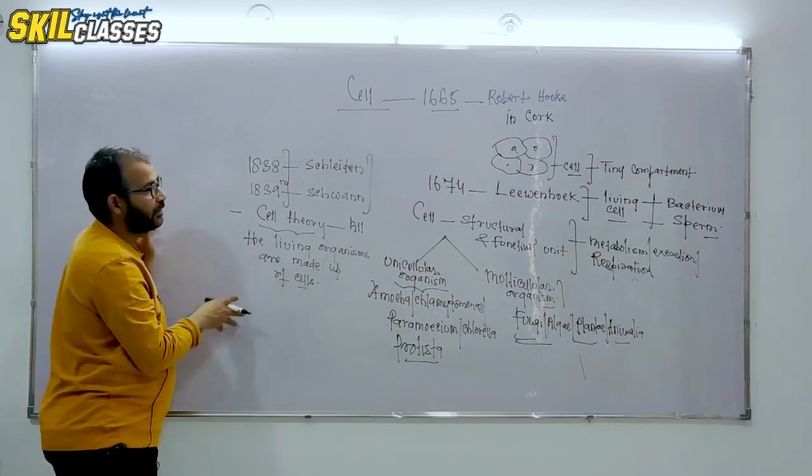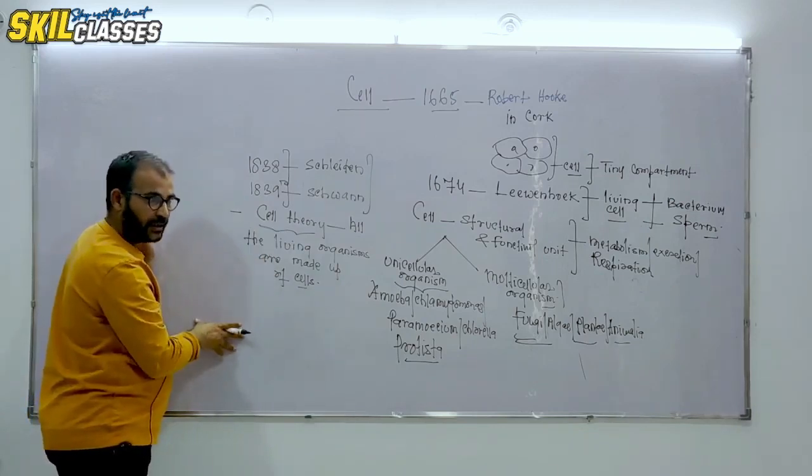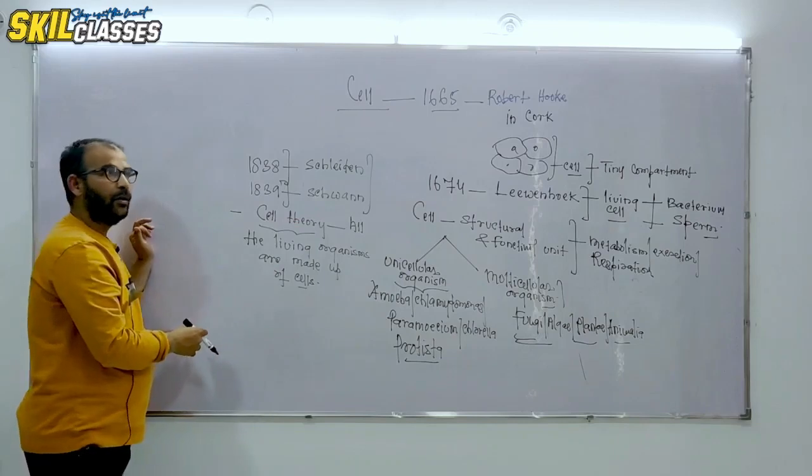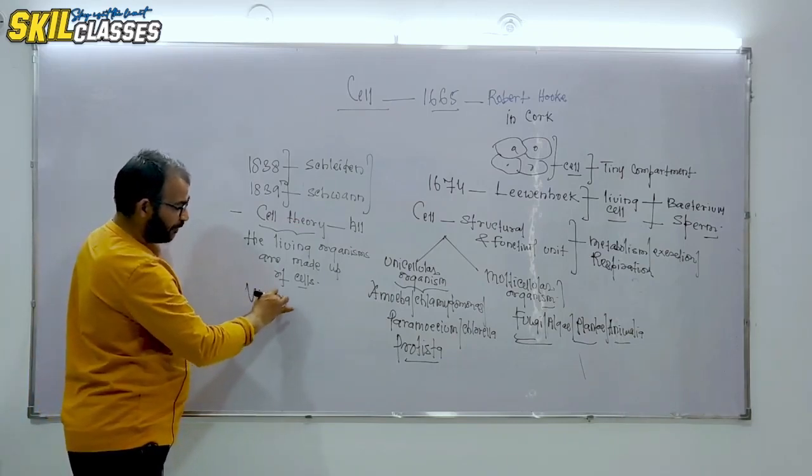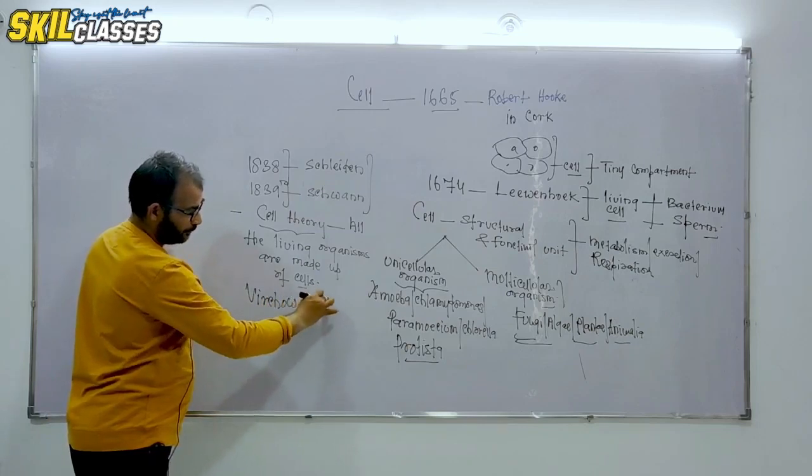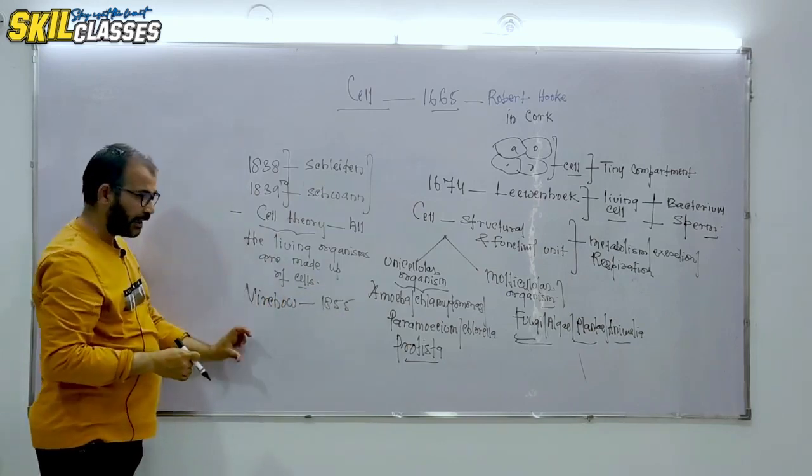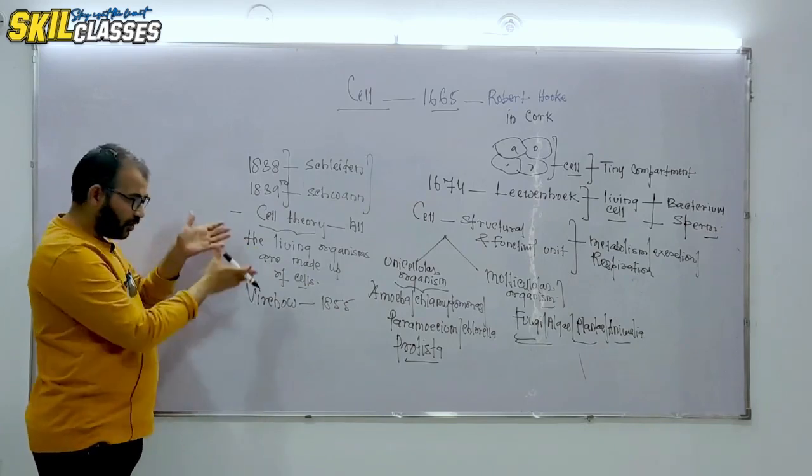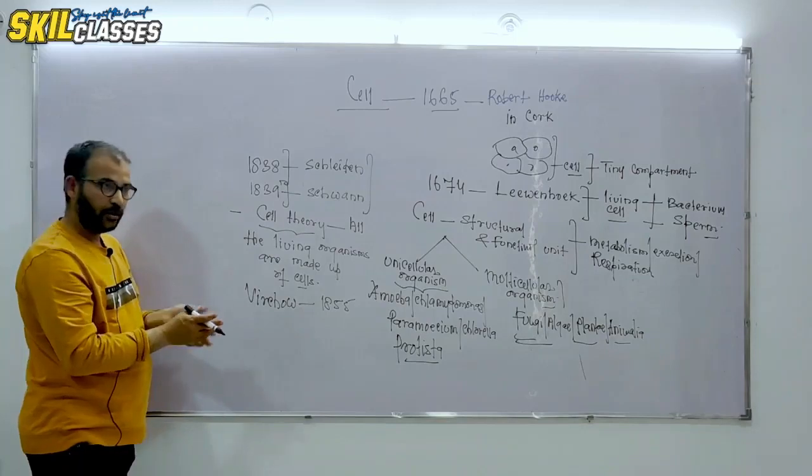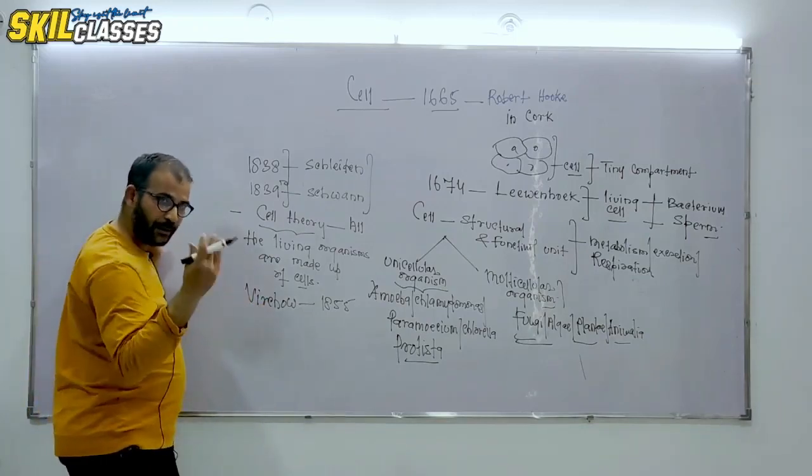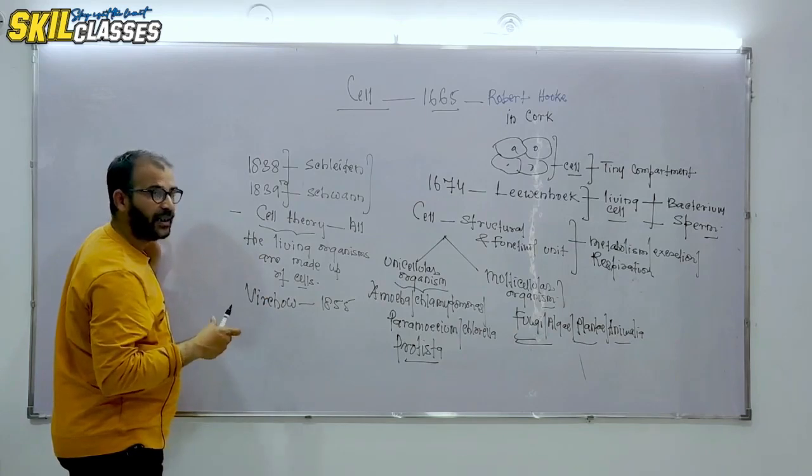Later on, this theory was expanded in 1855. There was a corollary attached to it, one more sentence. It said that the cell arises from pre-existing cells. This is called Darwinism. You will learn Darwin's principle of evolution and how cells are made.